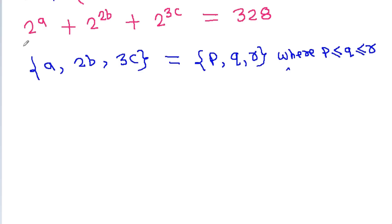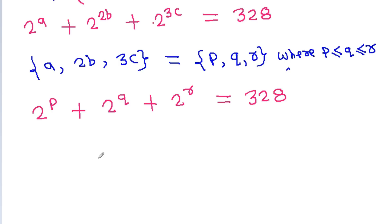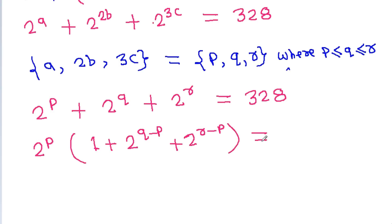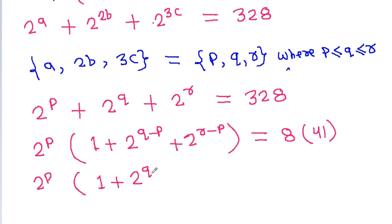So any one of 2^a, 2^(2b), and 2^(3c) will become 2^p, another will become 2^q, and another 2^r, and their sum equals 328. Since p is the smallest, we factor out 2^p to get: 2^p times (1 + 2^(q−p) + 2^(r−p)) = 328 = 8 × 41.